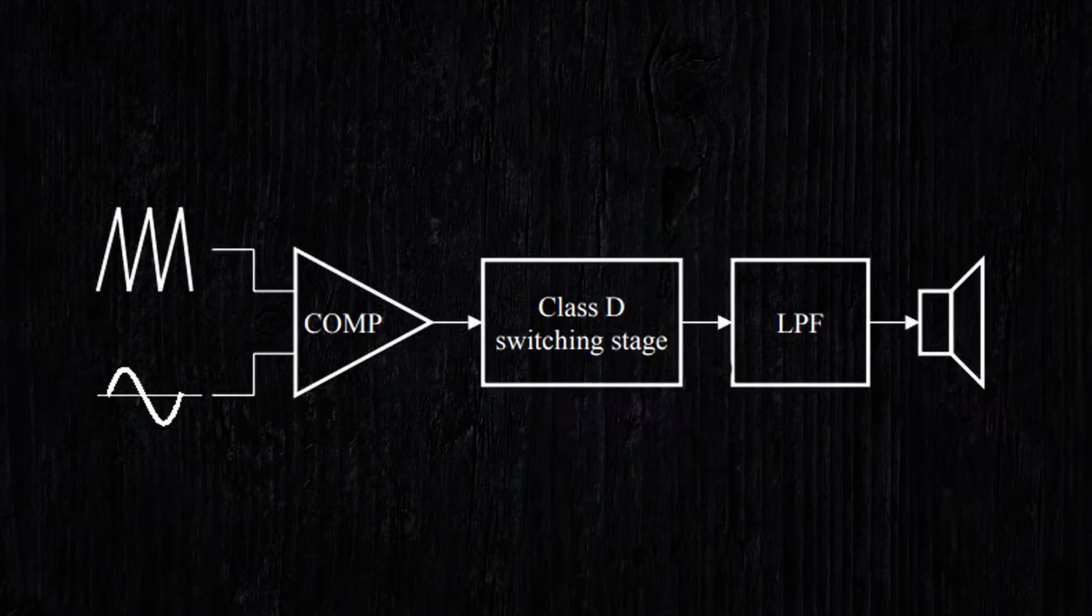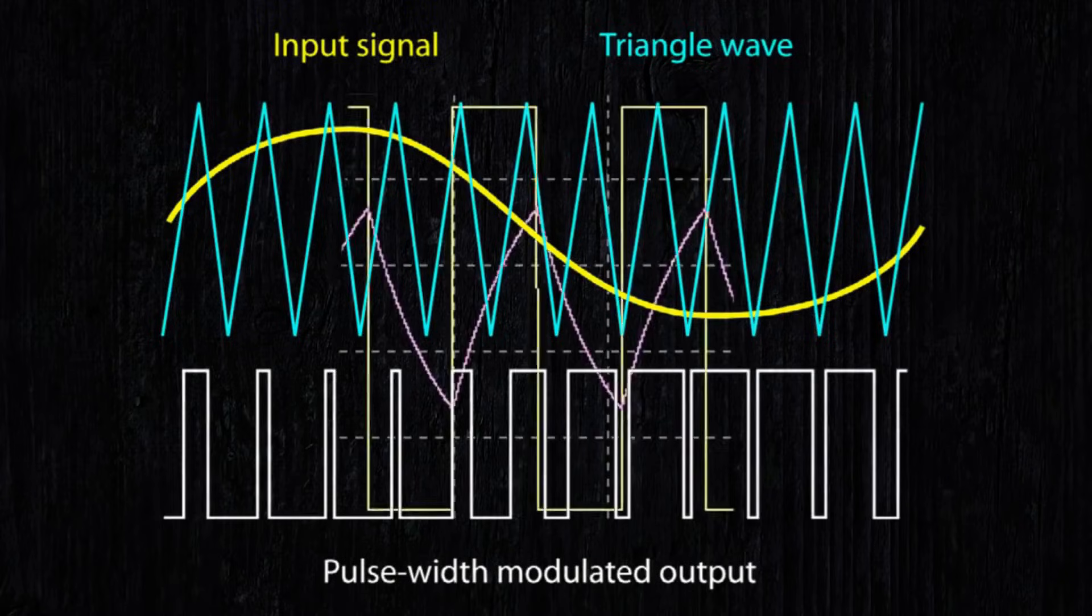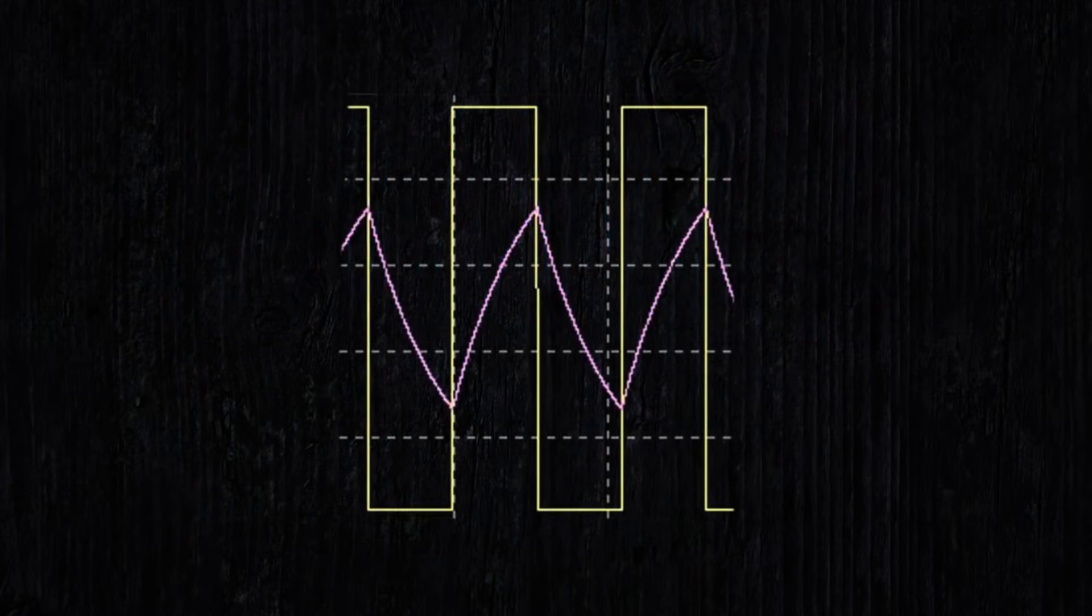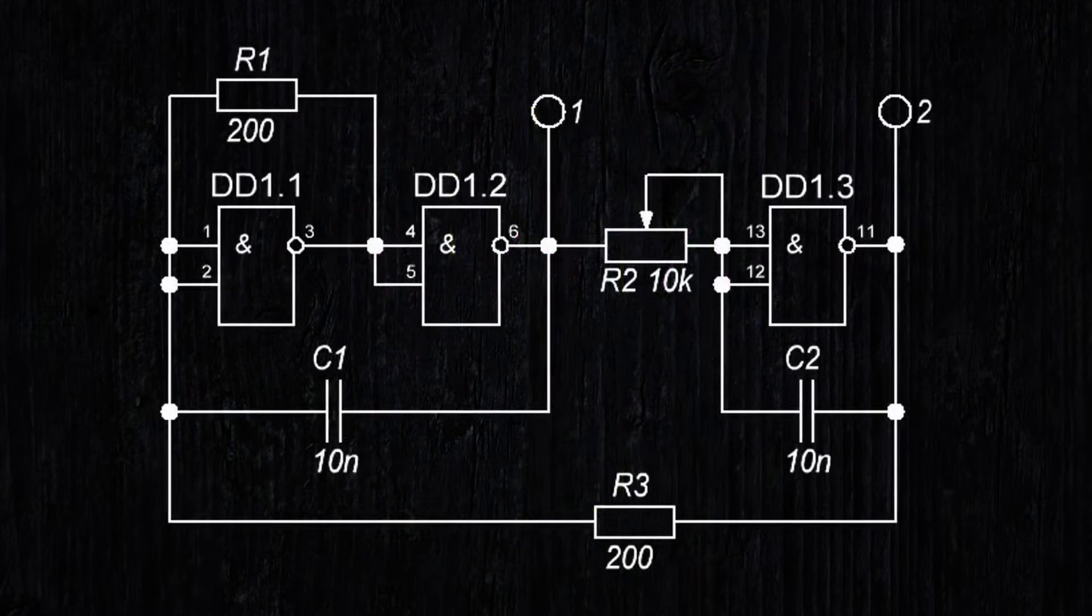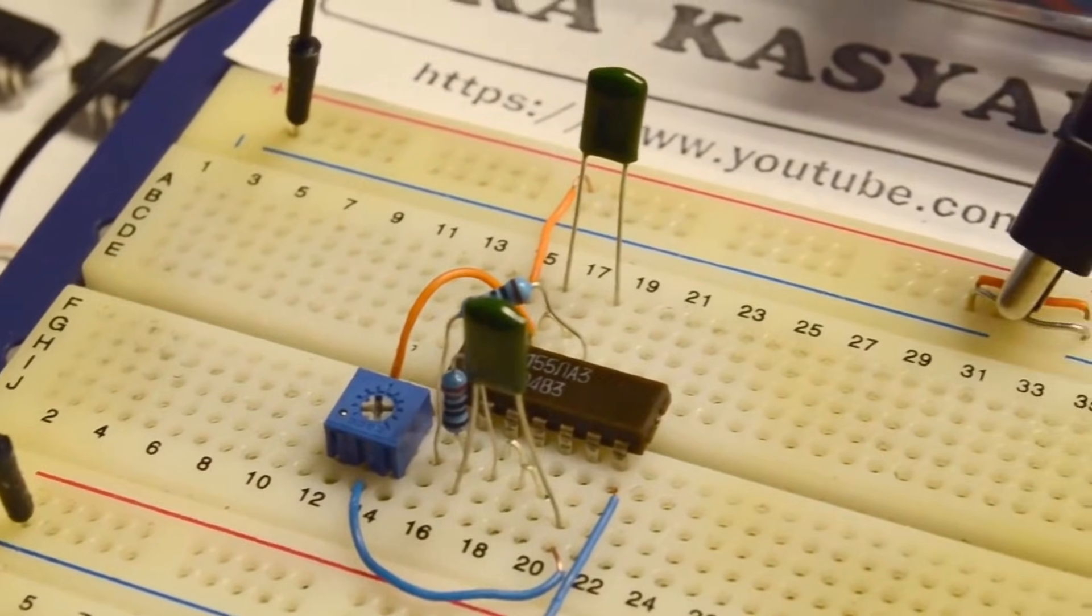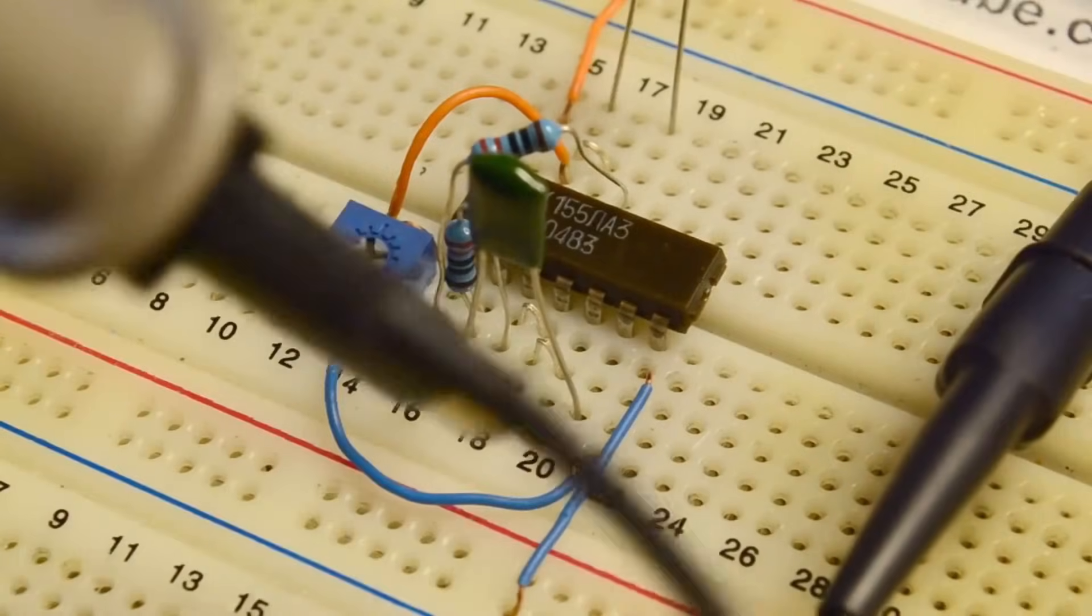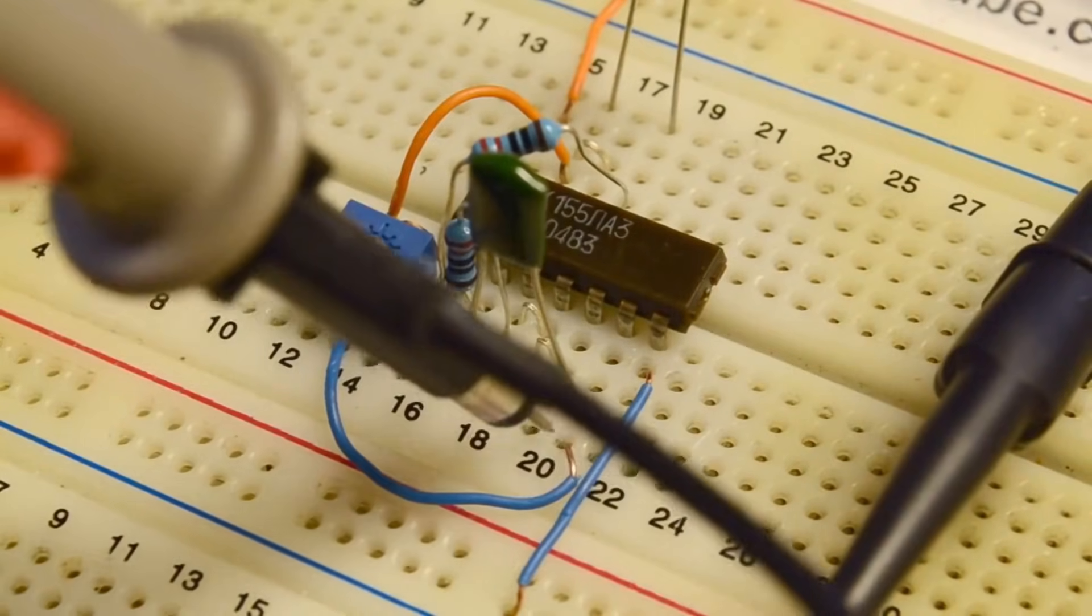We'll assemble a classic class D amplifier circuit without feedback. First, we need a high-frequency square wave on the order of hundreds of kilohertz, which will need to be integrated to obtain a triangle wave. We'll take a K155LA3 and assemble the following circuit. This is a classic square wave generator with an added integrating circuit.